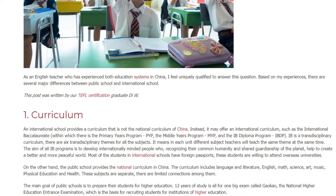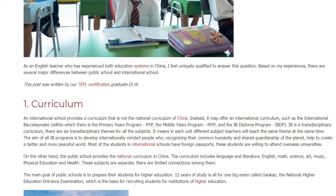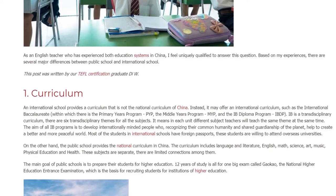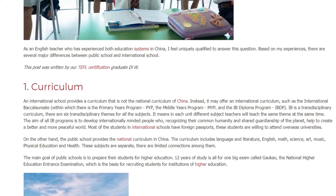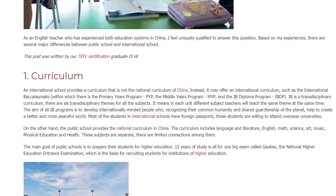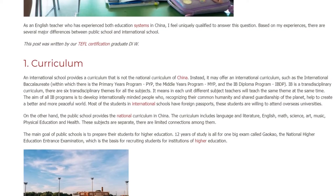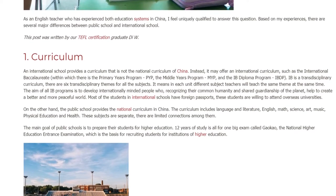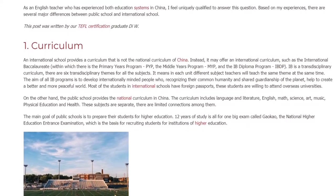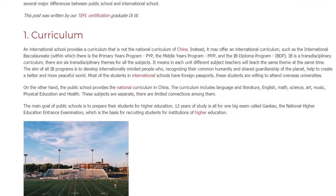There are six transdisciplinary themes for all the subjects, meaning that in each unit, different subject teachers will teach the same theme at the same time. The aim of all IB programs is to develop internationally minded people who, recognizing their common humanity and shared guardianship of the planet, help to create a better and more peaceful world. Most students in international schools have foreign passports and are willing to attend overseas universities. On the other hand, the public school provides the national curriculum in China. The curriculum includes language and literature, English,